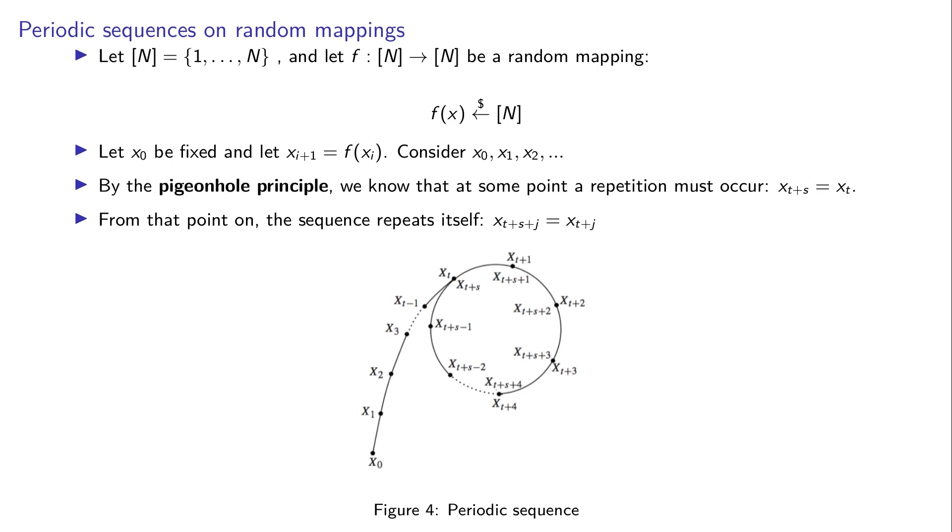For the next algorithm we need to discuss periodic sequences on random mappings. Suppose we have a set of n integers and define a random mapping from this set onto itself. We choose an initial value x₀ and apply f repeatedly to get x₁ = f(x₀), x₂ = f(f(x₀)), and so on.